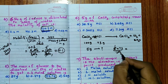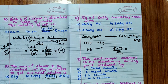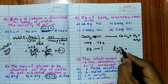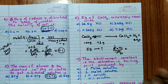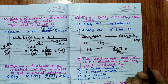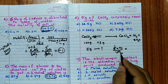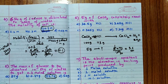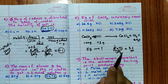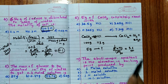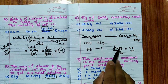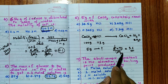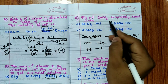Continuing the calculation: 5 × 73 / 100 = 3.6g of HCl. The answer is B.